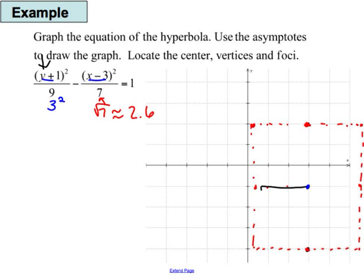This is going to be my box that will help me find the asymptotes. So 2.6 and 3, those are the A and B values.